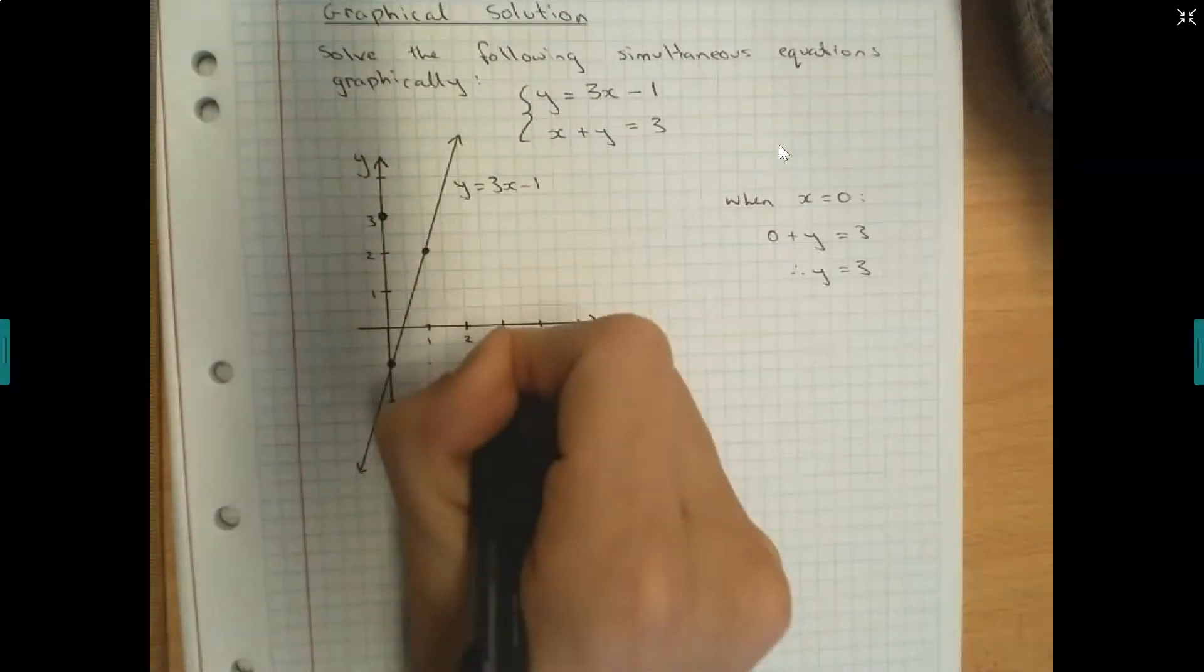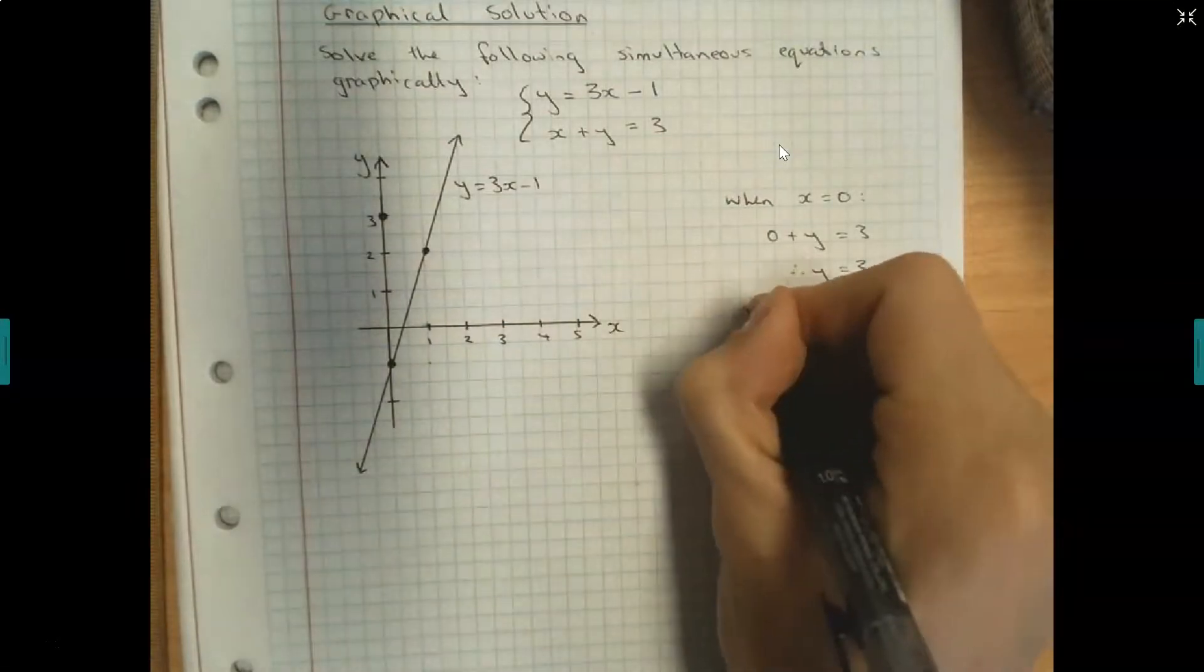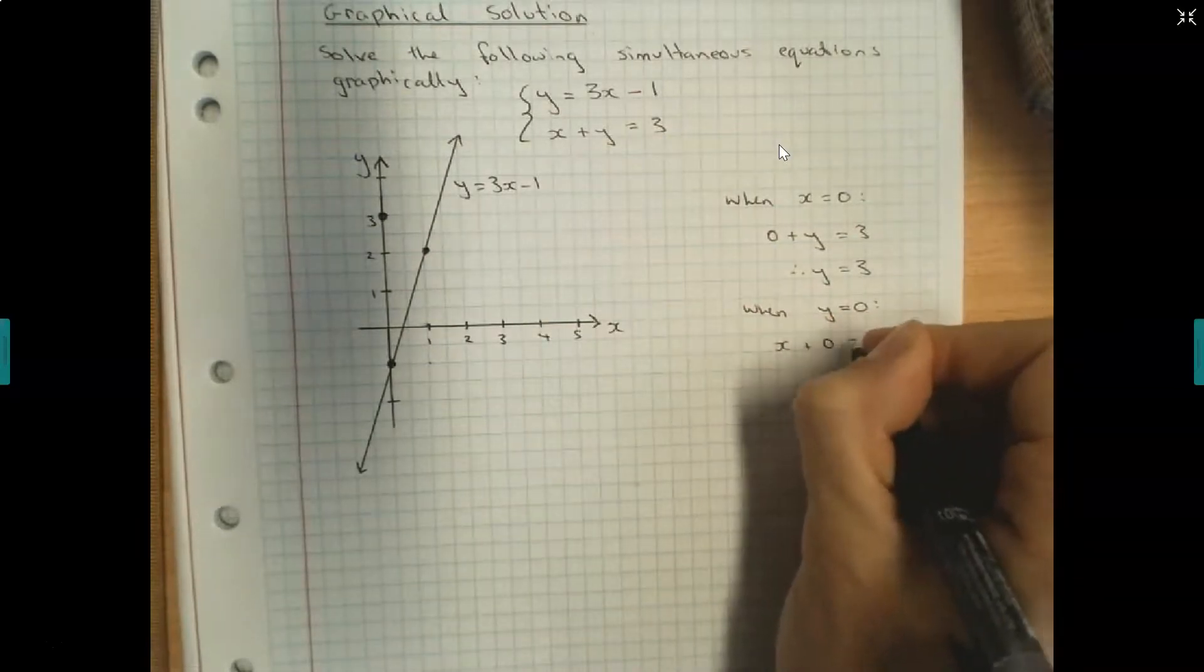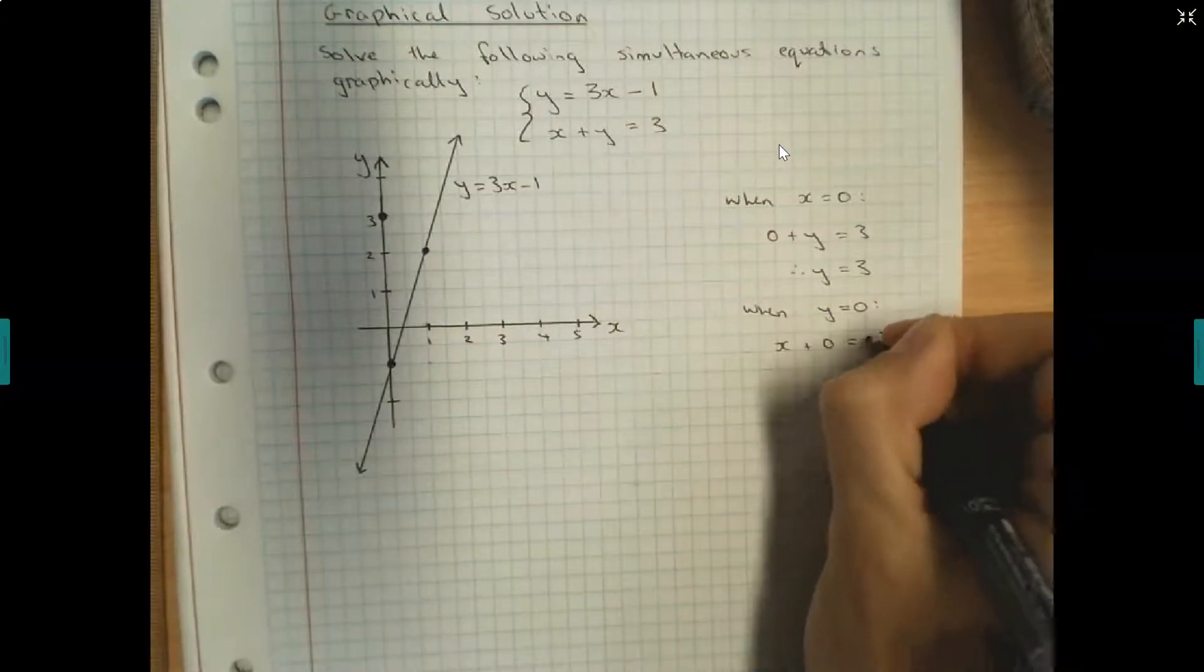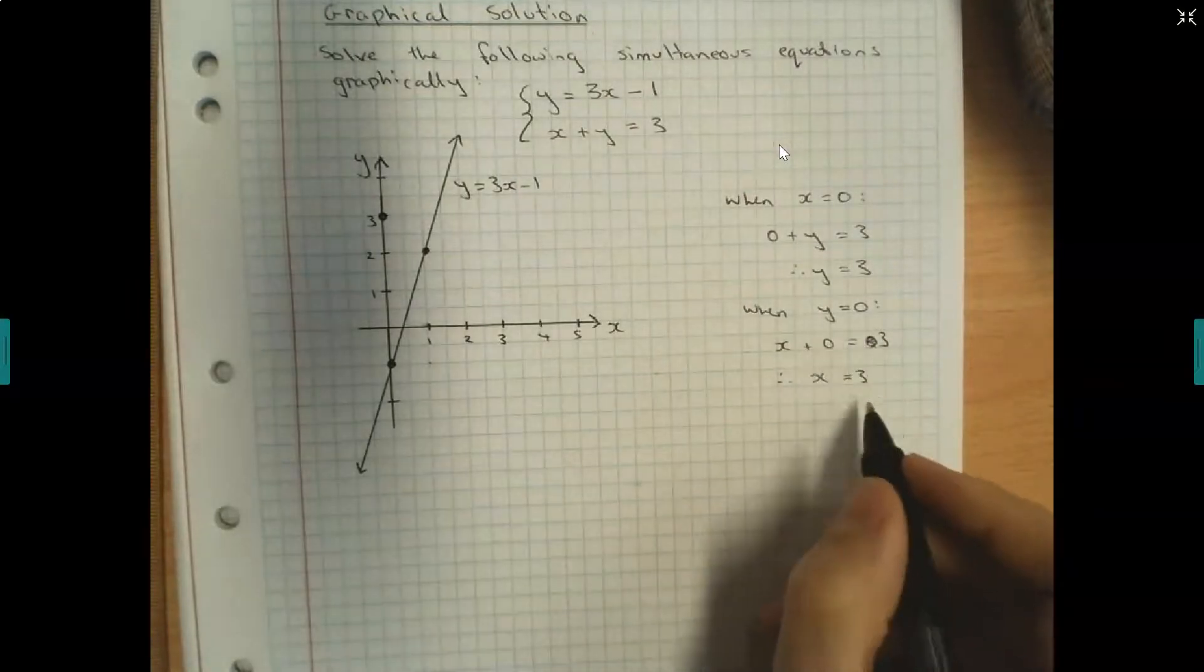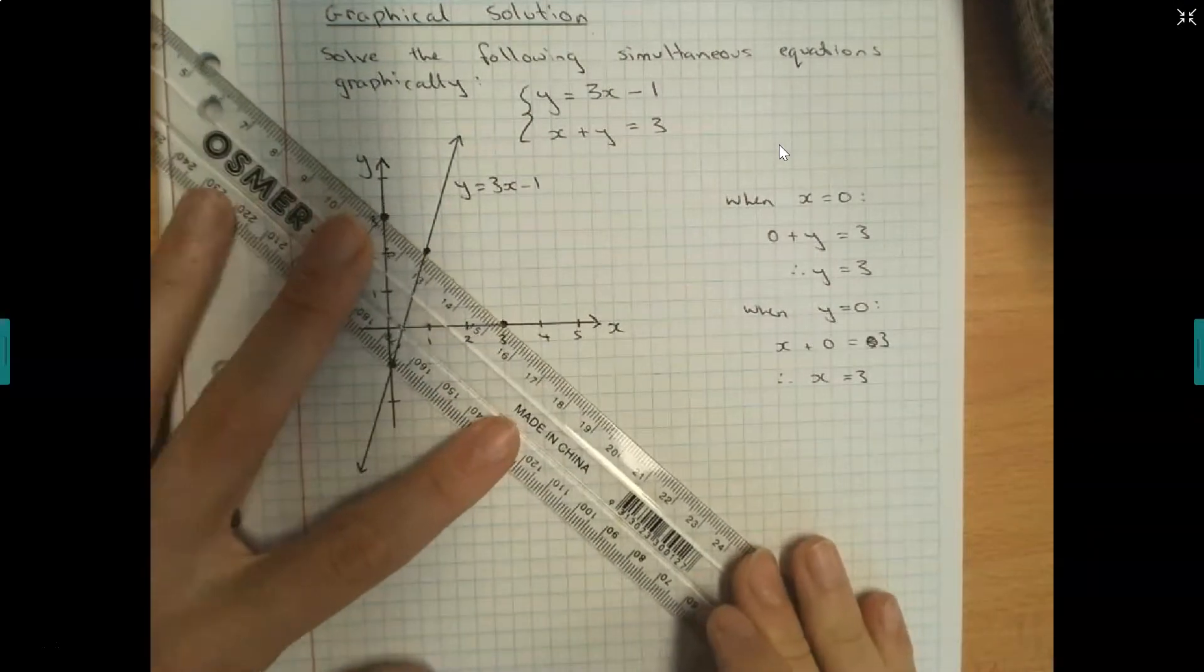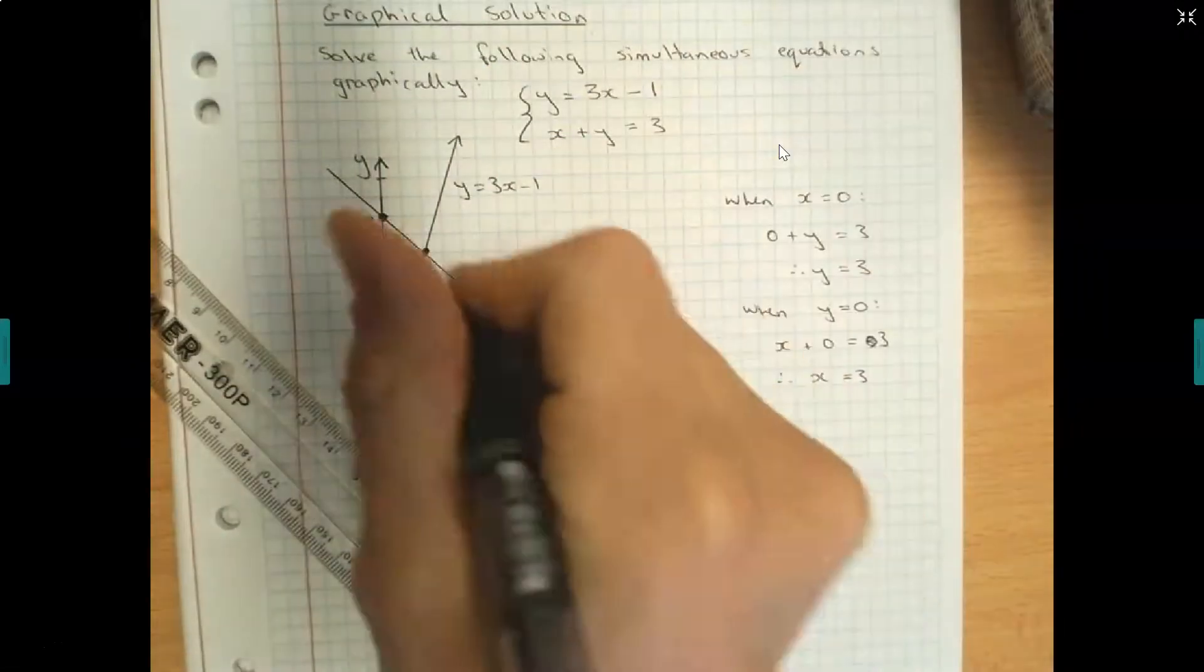And then when y is equal to 0, I would know that x plus 0 is equal to 3. Therefore, x is equal to 3. So when y is 0, x is equal to 3, which is at this point here. I have two points. Therefore, I can join them to form the line. And it will cross through here.